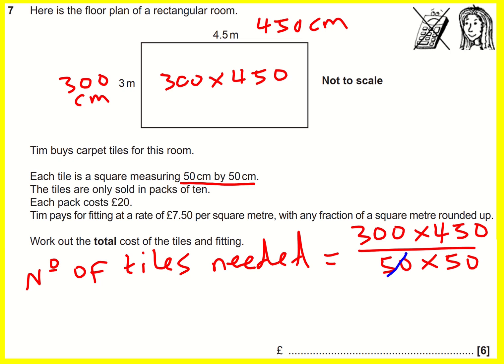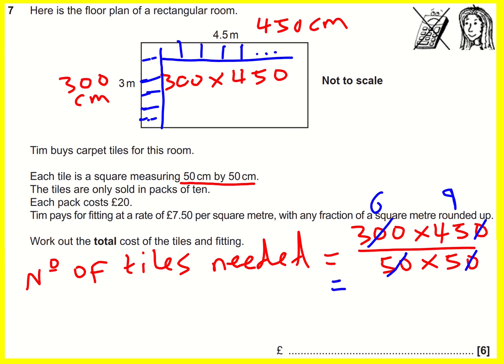How many 50s go into 300? It's 6, so I can just write 6 here. Another way of thinking about it: I've got 300 here — how many lots of 50 can I fit along here? The answer is 1, 2, 3, 4, 5, 6. Then we do the same thing along the other dimension. In any case, you should get 54 tiles in total.